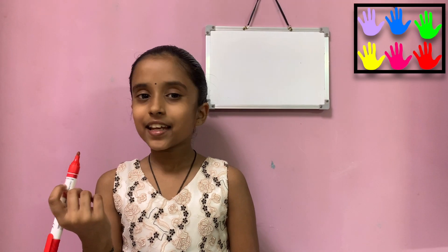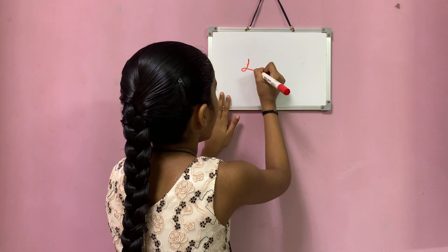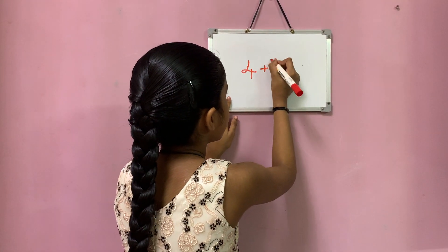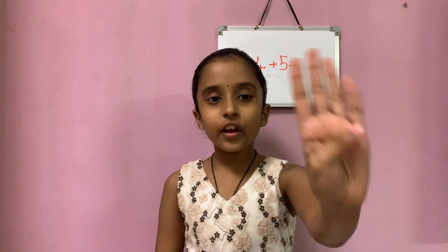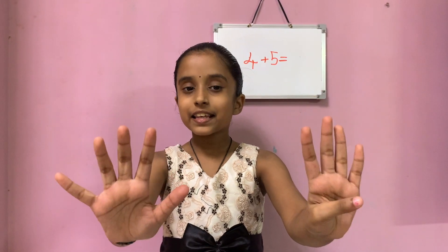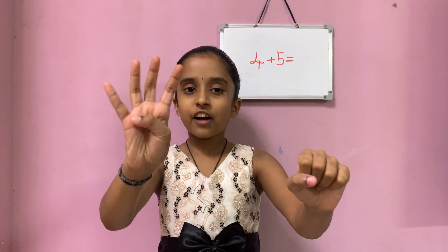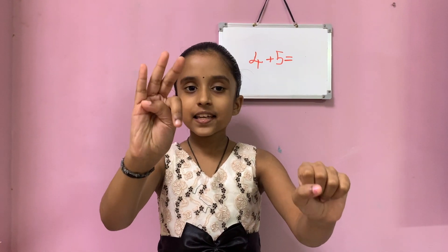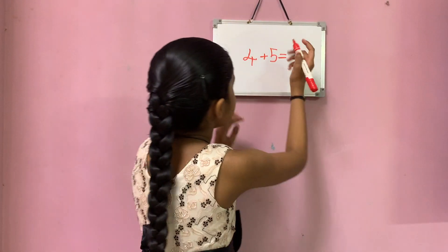Let's see another example. Four plus five equals: put four in my left hand and five in my right hand. Let's count: one, two, three, four, five, six, seven, eight, nine. So the total answer is nine.